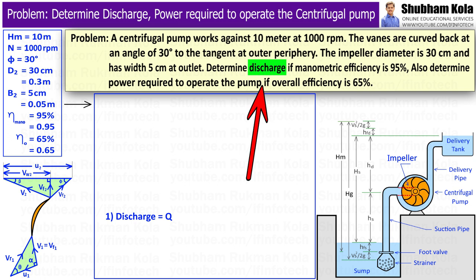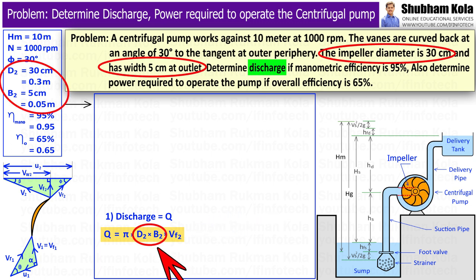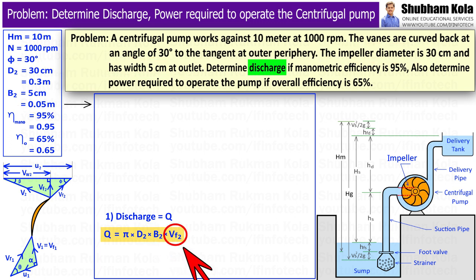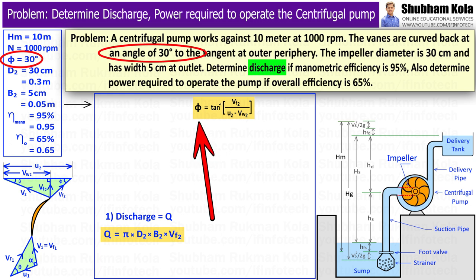Here in this problem, first we want to calculate discharge rate Q which is given by formula: Pi D2 B2 into Vf2. Here values of diameter and width at outlet of impeller is given in problem: D2 equal to 0.3m and B2 is given as 0.05m. Here we need to calculate Vf2 which we can calculate from trigonometric ratio of tan phi, which is equal to opposite side Vf2 divided by adjacent side U2 minus Vw2, where angle phi is given in problem as 30 degrees.